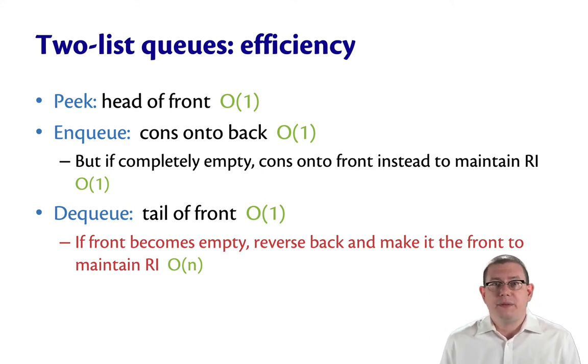If the front's empty, then we've got to do the entire back. So how many elements is that? Let's call it n, the number of elements currently in the queue. So in the worst case, dequeue is actually big O of n.